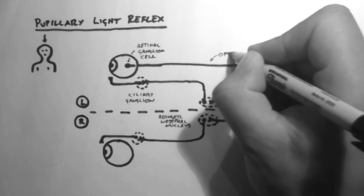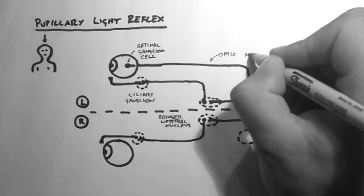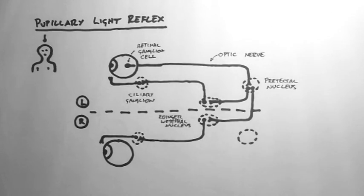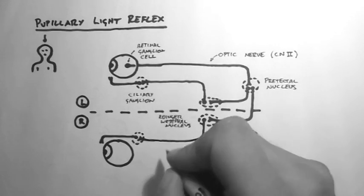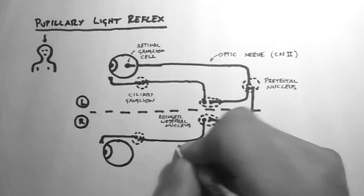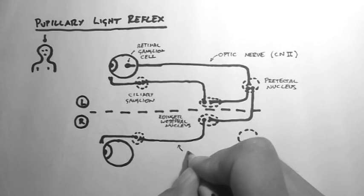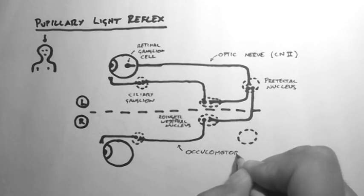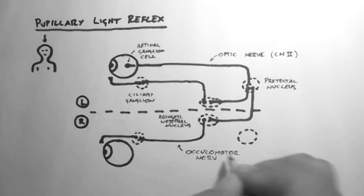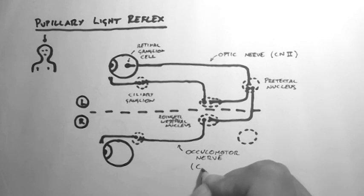So this nerve here is the optic nerve, also known as cranial nerve two. This nerve here is the oculomotor nerve, also known as cranial nerve three.